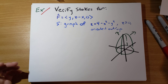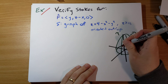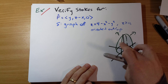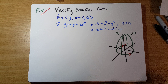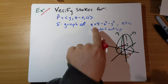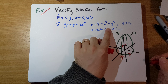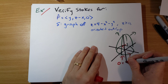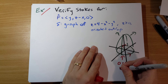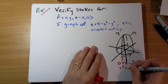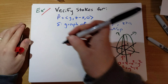We need to do two separate integrals. We need to do a vector line integral around the boundary. The boundary occurs when z equals zero, so 0 = 4 - x² - y², which gives x² + y² = 4.